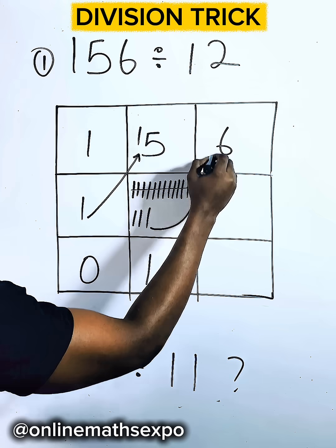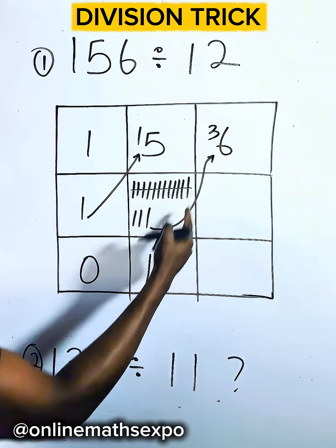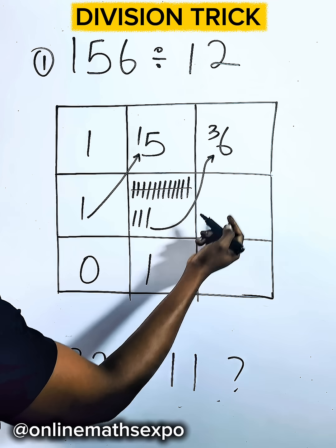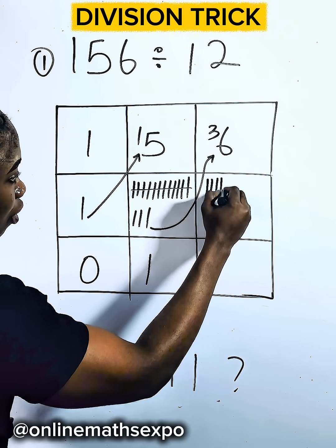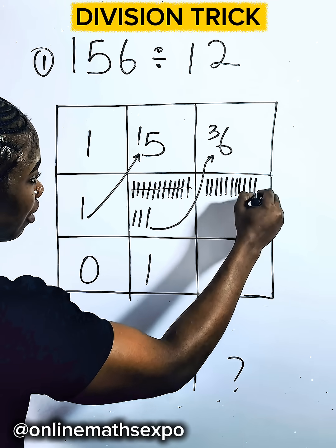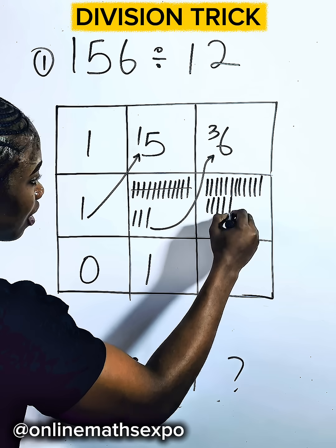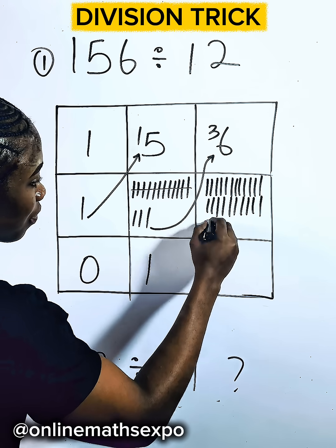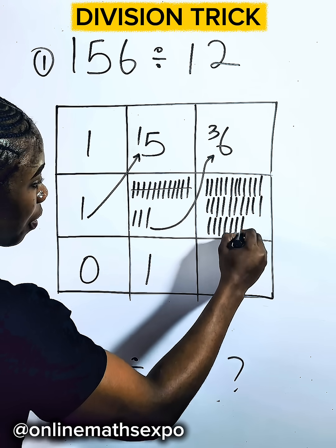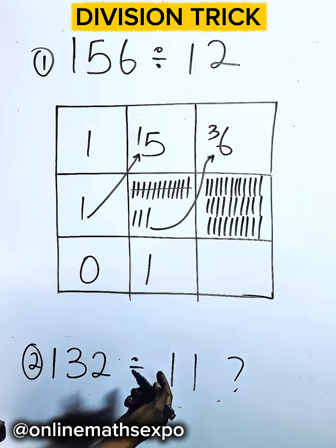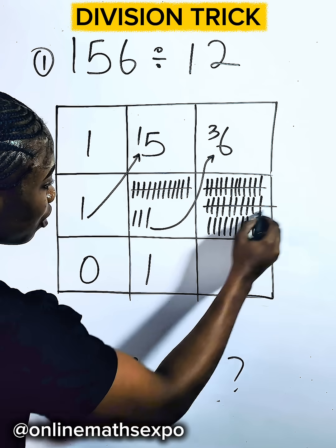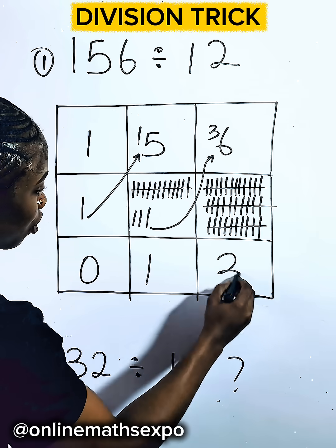It becomes 36. So check how many 12s we can find in 36: 1, 2, 3, 4, 5, 6, 7, 8, 9, 10, 11, 12, 13, 14, 15, 16... So this is our 36. You see we have three of the 12 there, so I'm going to write 3 here.